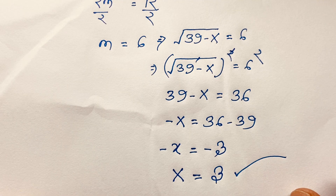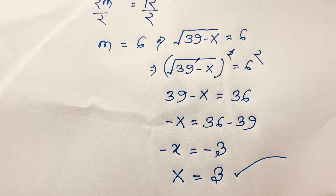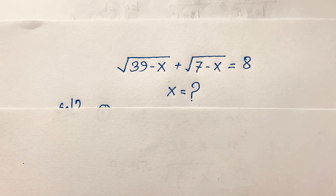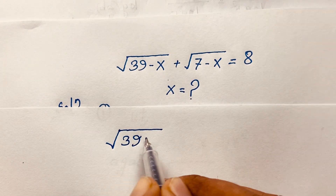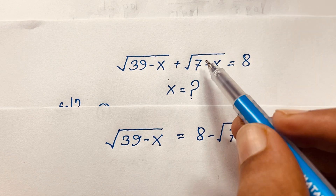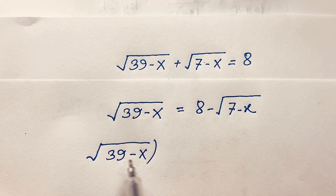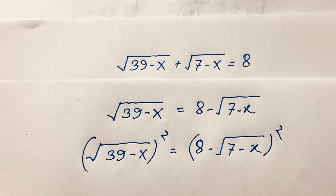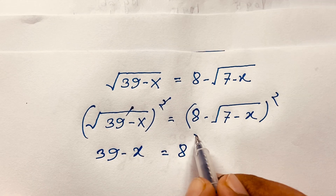Now I solve this question using the second method. Starting from square root of (39 minus x) equals 8 minus square root of (7 minus x), I square both sides: 39 minus x equals (8 minus square root of (7 minus x)) squared, which expands using the a minus b whole square formula as a squared minus 2ab plus b squared.